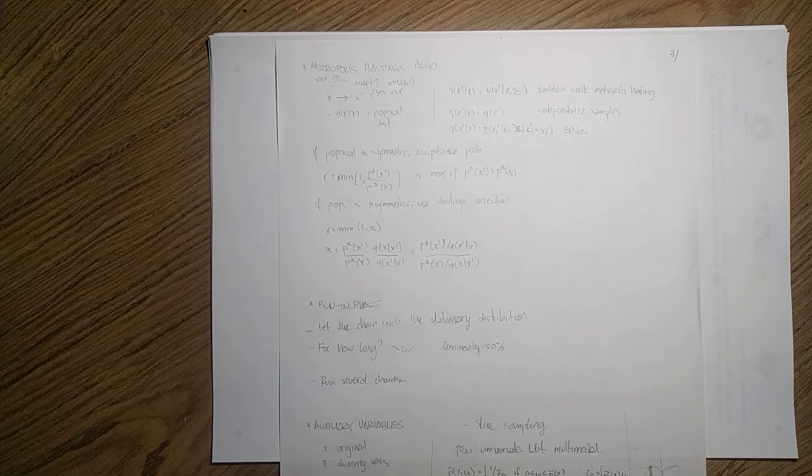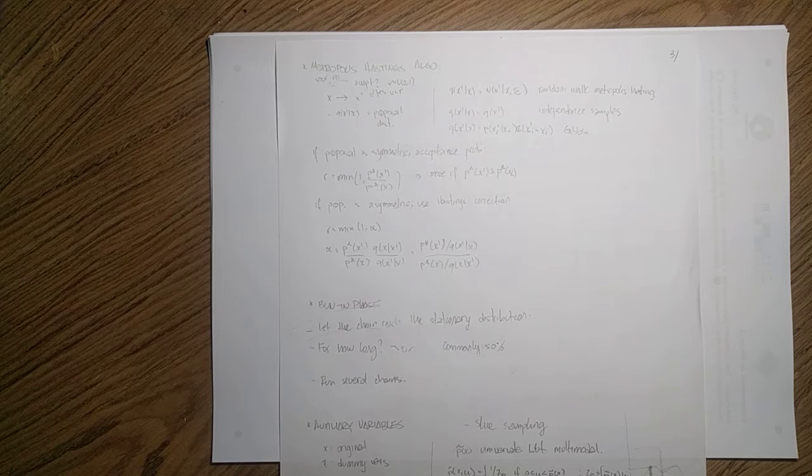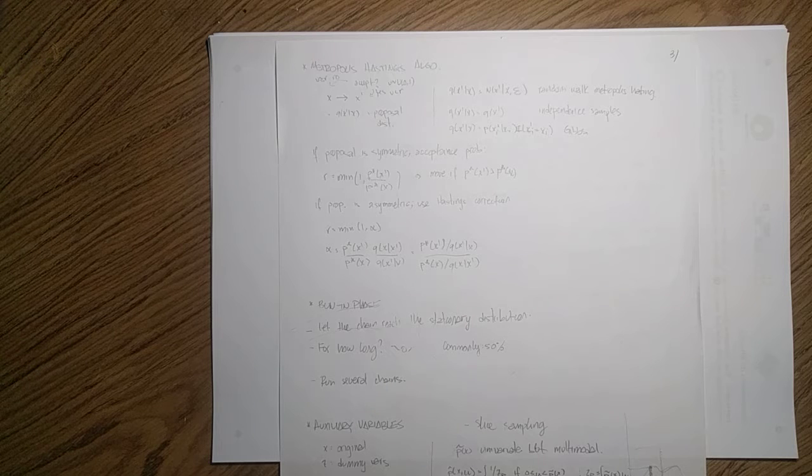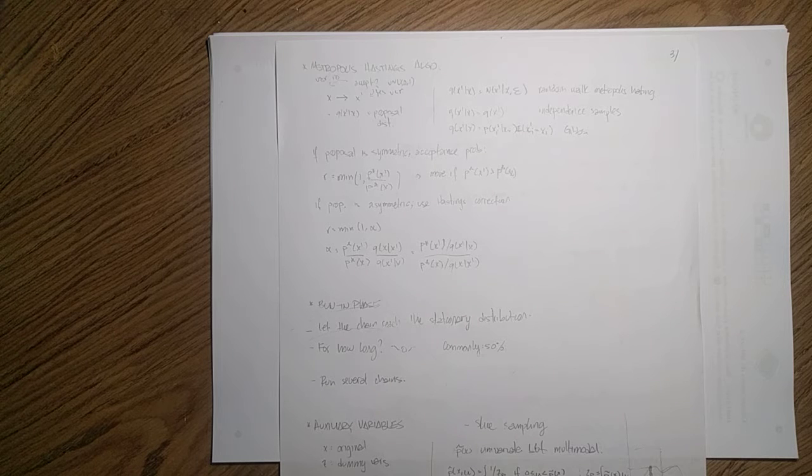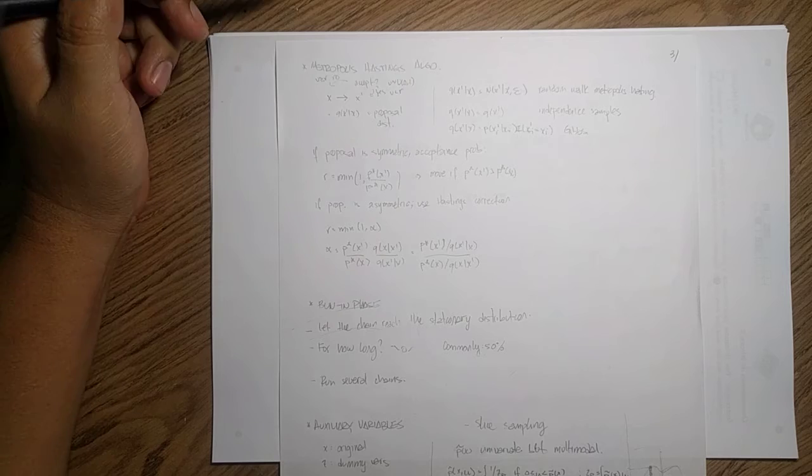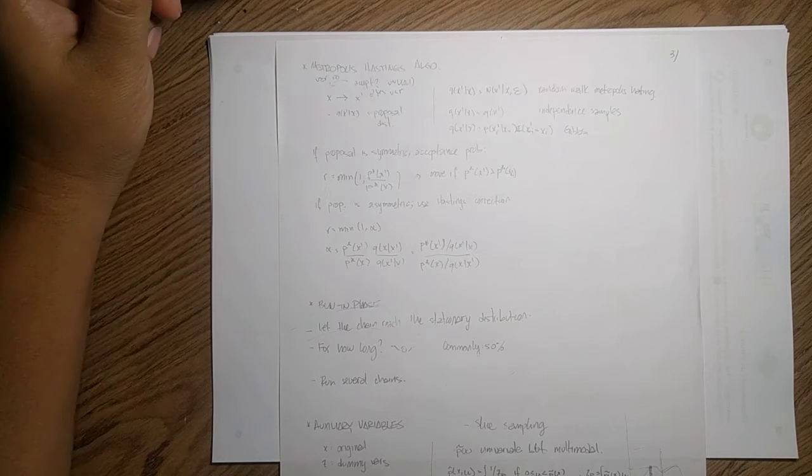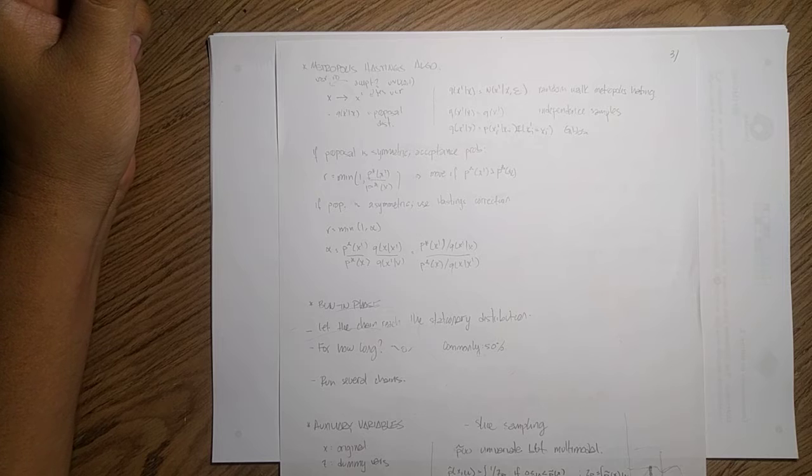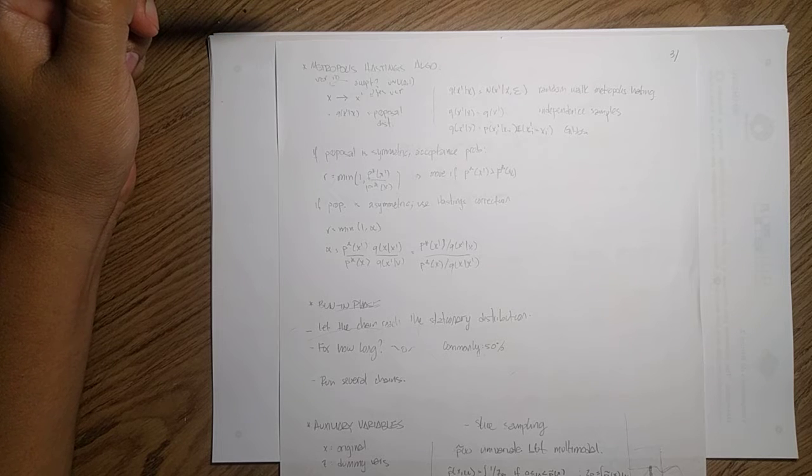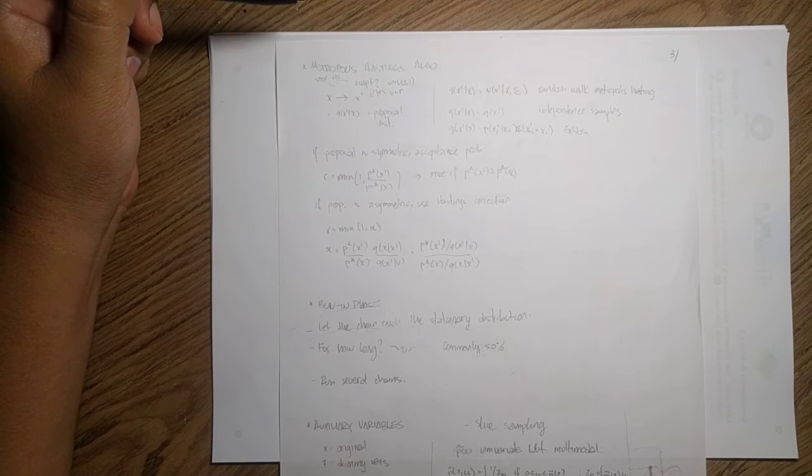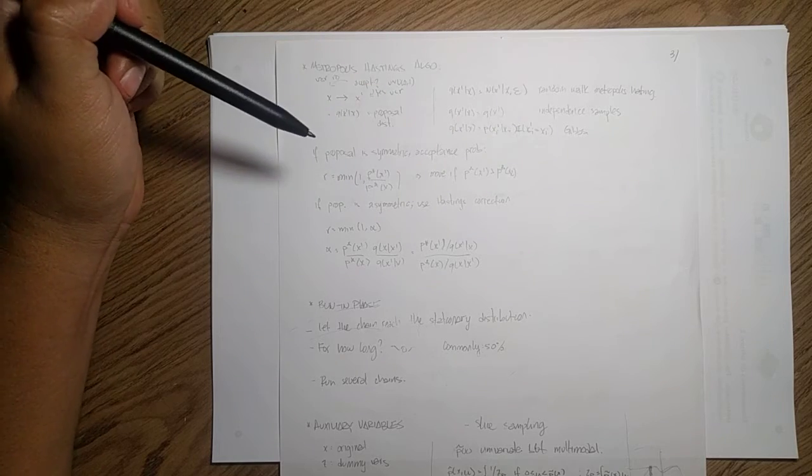So we're going to continue talking about different algorithms for doing more robust sampling and now we're going to focus on the Metropolis-Hastings algorithm. So this algorithm is a more advanced version, if you want, so to call it like that, of our Gibbs algorithm.